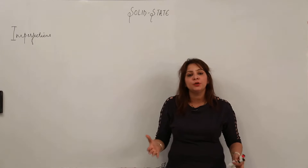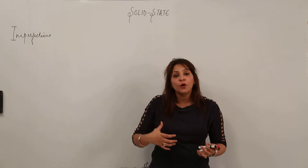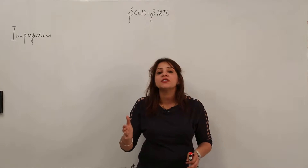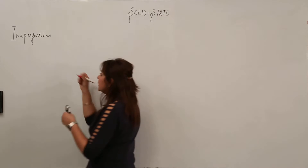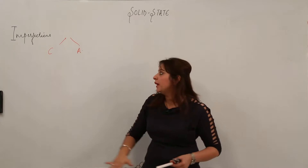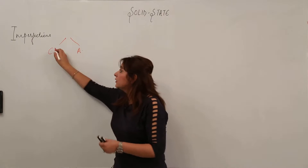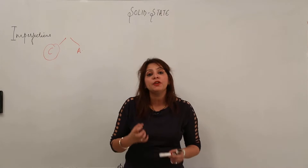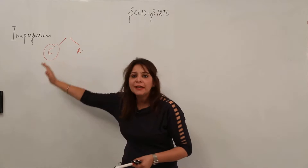Everything in the universe wants to attain stability, to be ordered or perfect, but still we get to see imperfections. Likewise, we get to see imperfections in solids as well. As we already know, there are two types of solids: crystalline and amorphous. In crystalline solids there is an ordered arrangement, and in amorphous there is an irregular arrangement. But even crystalline substances, which have regular ordered arrangements, still show certain imperfections.